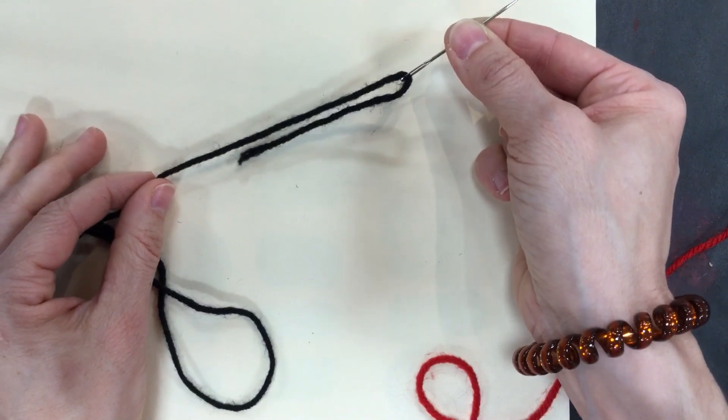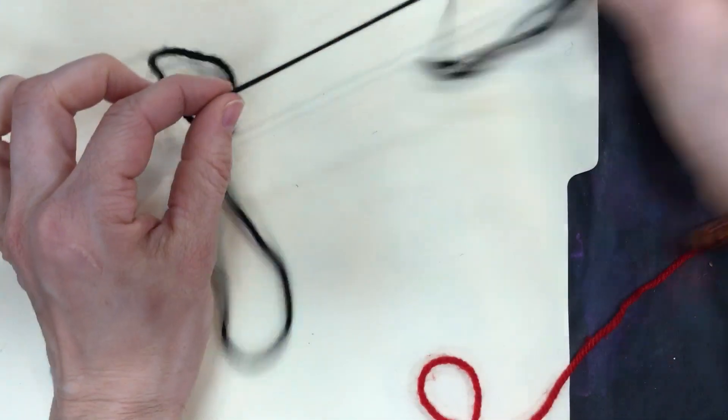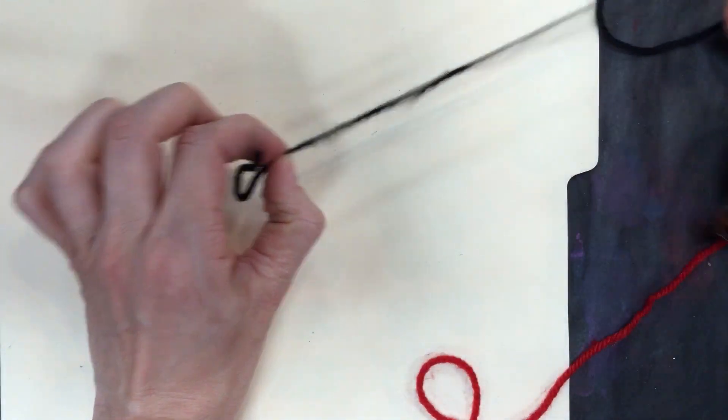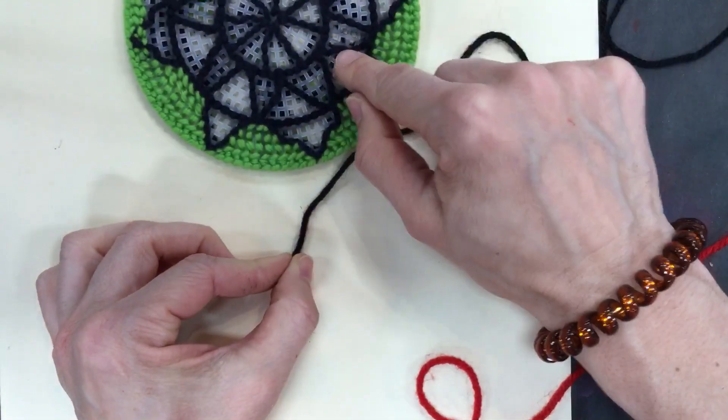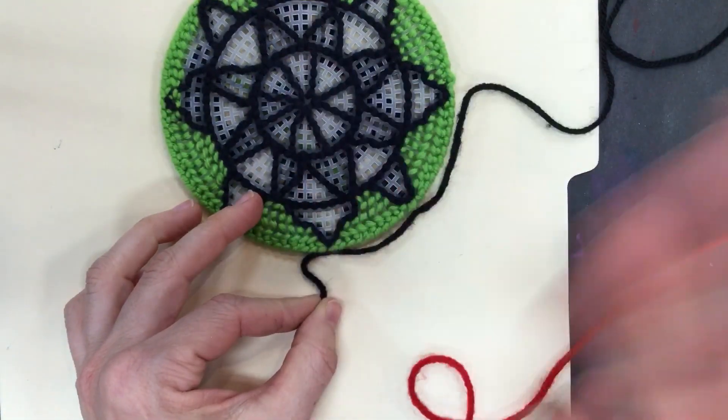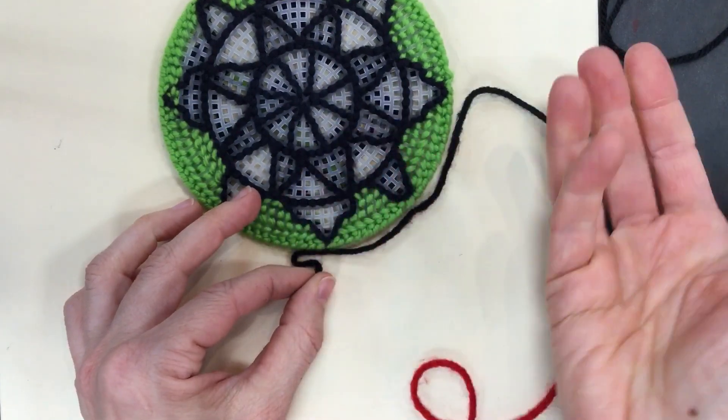But what you do need, and this makes logical sense, is the end of the thread way down here, we need to put a knot in it because when I'm sewing, I don't want the needle to come through, and if I don't have a knot, it's not going to catch anywhere.